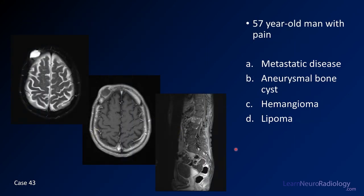Case number 43 is a 57-year-old man with pain. We have a couple of brain images — a T2 and a post-contrast — and an additional image of the spine, which may be a clue. Your choices are metastatic disease, aneurysmal bone cyst, hemangioma, or lipoma.